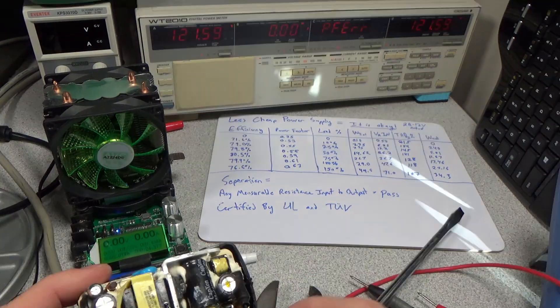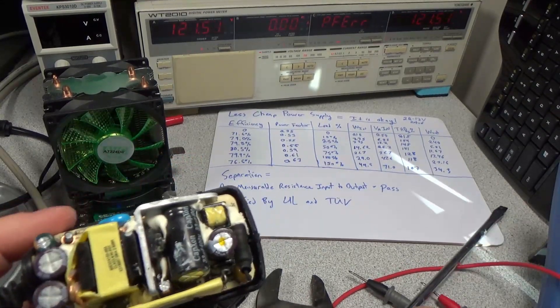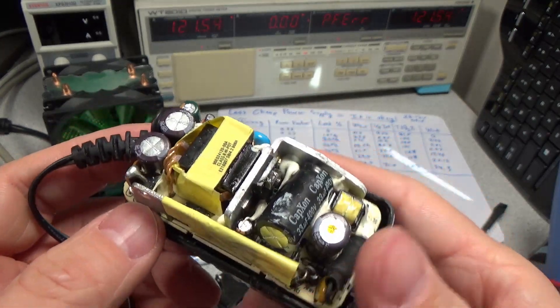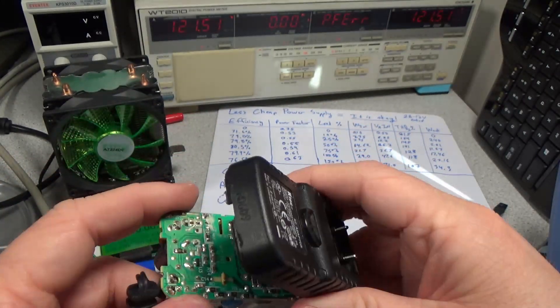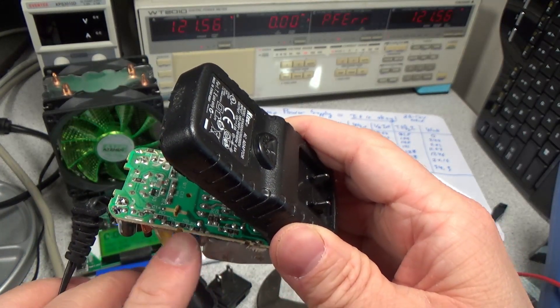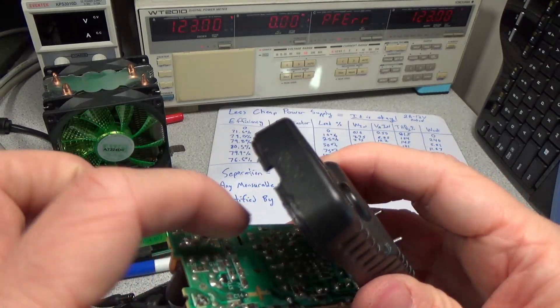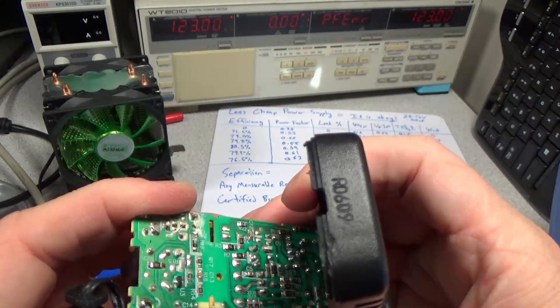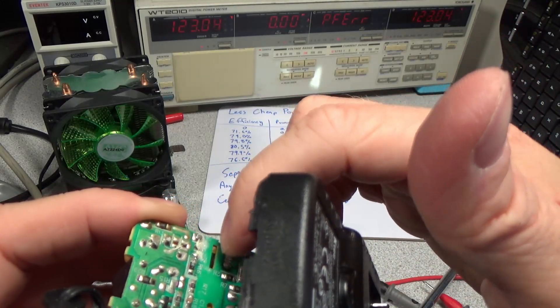So next thing we're going to do is go ahead and crack this thing open. All right, so I got the less cheap power supply open and we can see that this thing is loaded. One of the things we looked at on the bottom is we can see that there is actually some resistance between the two sides. You can see I have our opto isolator with a slot cut in it. Look at the very very large opto isolator here with a slot cut in the board across.